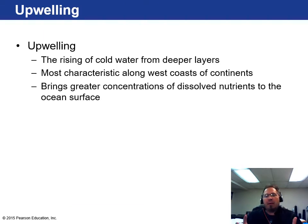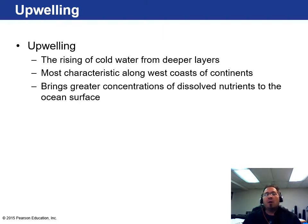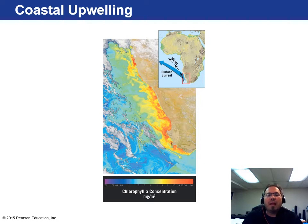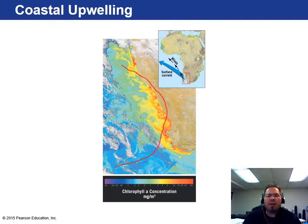Water rises from deeper layers — upwelling along the west coast brings concentrations of dissolved nutrients to the ocean surface. This is typically where you find a lot of biodiversity, all kinds of creatures thriving because there's lots to eat. Here's an image off the coast of South Africa showing high chlorophyll concentration at the surface due to the circulation pushing cold, nutrient-rich water up.